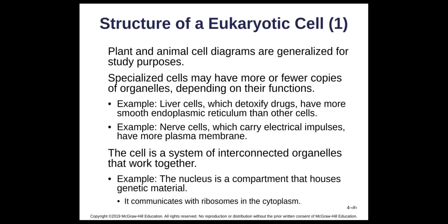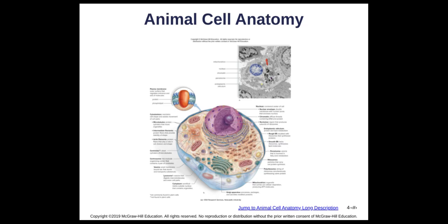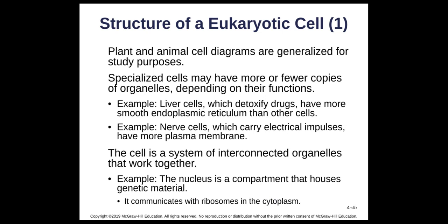When we look at plant and animal cell diagrams, we're looking at generalized drawings. Specialized cells doing specific jobs may have more, fewer, or different organelles depending on what they do. For example, liver cells that detoxify drugs have a lot more smooth endoplasmic reticulum compared to other body cells, and nerve cells that carry electrical impulses have a larger plasma membrane. The diagram is our generalized version; specialized cells can look different.